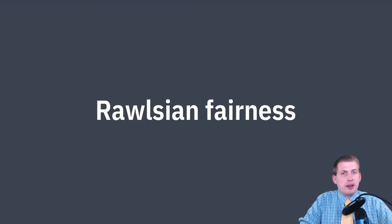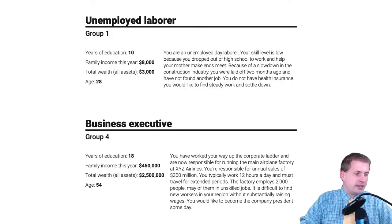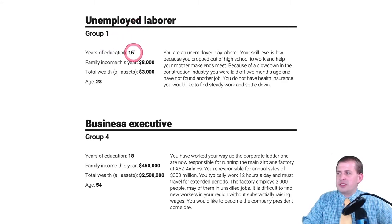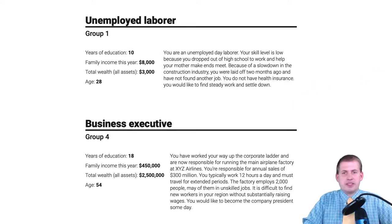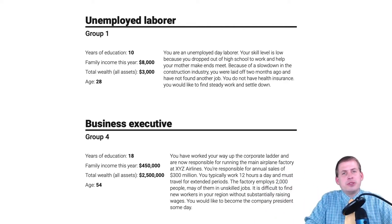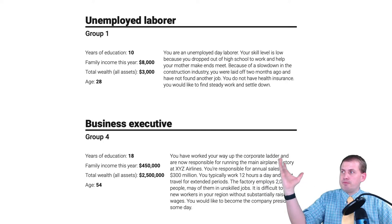If we were in person, we would do a quick simulation together about setting specific economic policies based on your preferences. You would all be divided into random groups of five different types, and each group has a specific persona — unemployed laborers with specific years of education, annual income, assets, age, and background. Then there are business executives with lots of income and assets. You get these different groups of people — five different groups in society with different preferences and income levels — and I give you a ballot about four different issues in society, and you vote based on your group's characteristics.